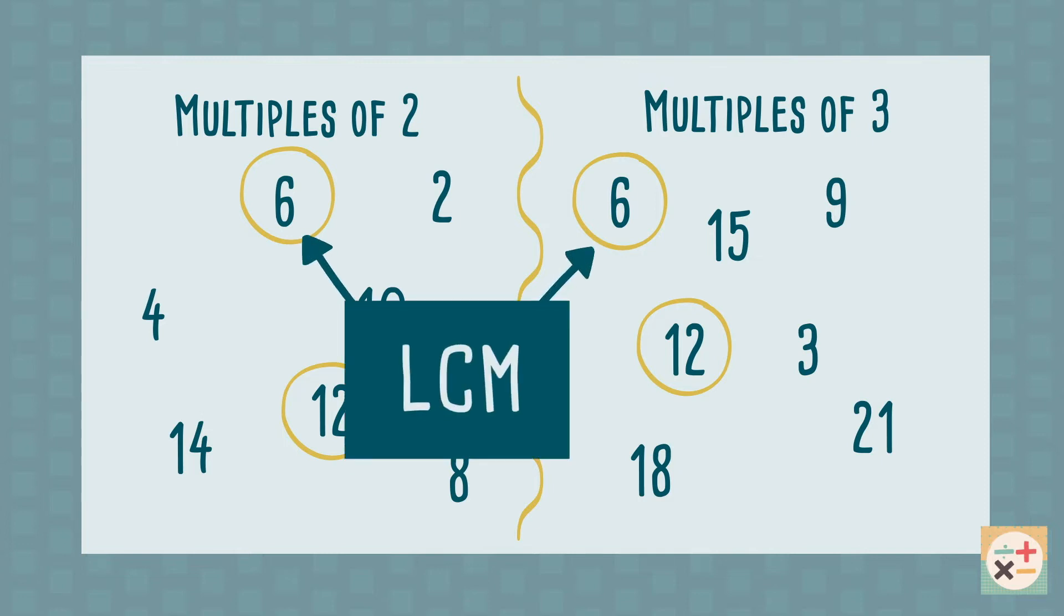The lowest common multiple, often abbreviated to LCM, is the smallest number of all of these common multiples.